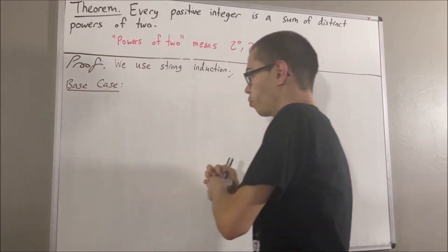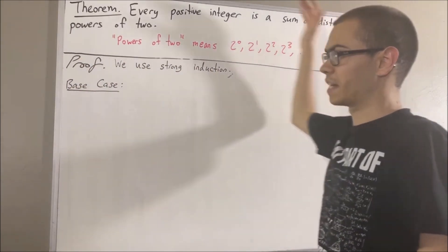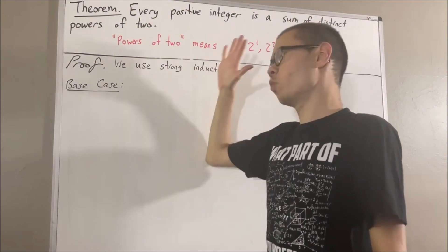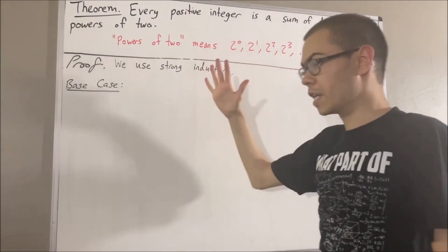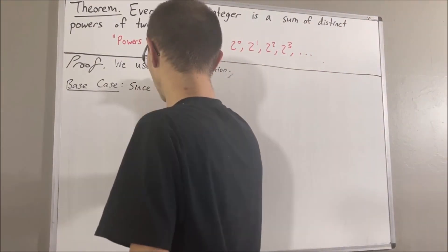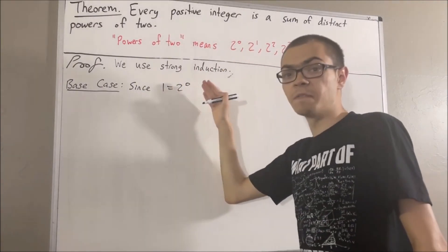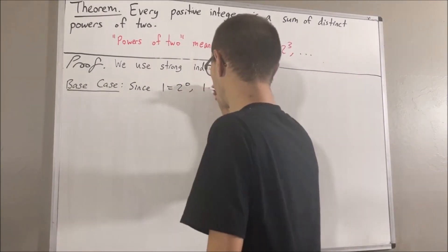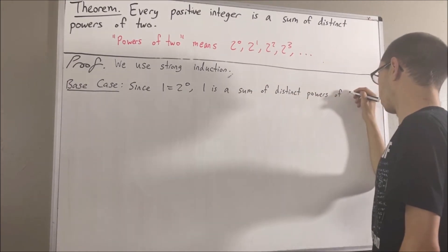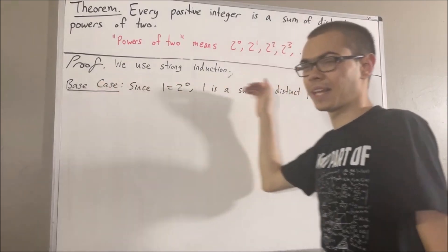The base case we're going to prove is: one is a sum of distinct powers of two. Well, we know that one is equal to two to the power of zero. So one is a sum of distinct powers of two, which completes our base case.